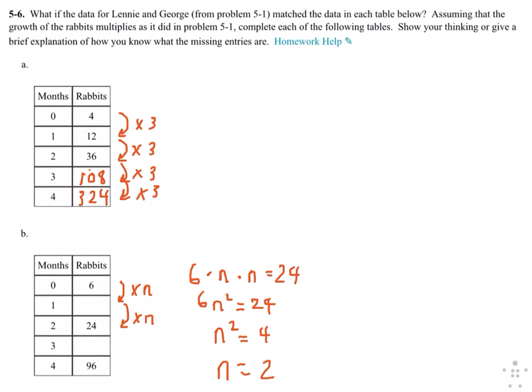So N is 2. So the multiplier here now, we know this is 2, times 2, times 2. So this would be 12. 24 times 2 is 48, and we're done with that problem.